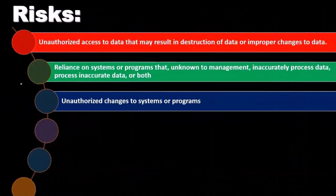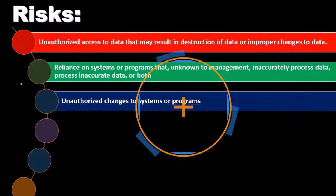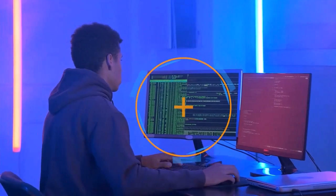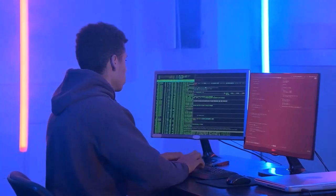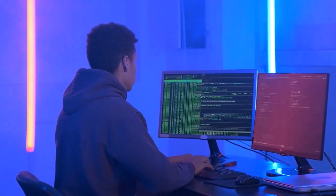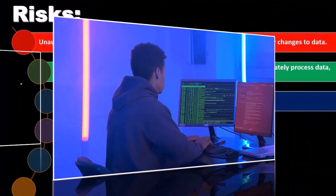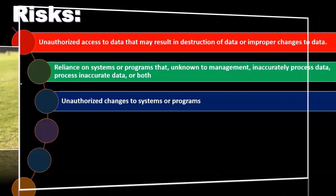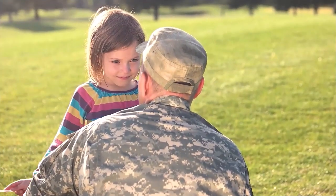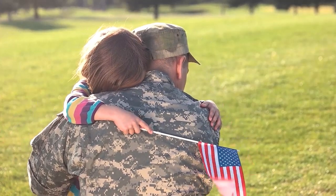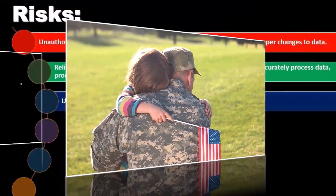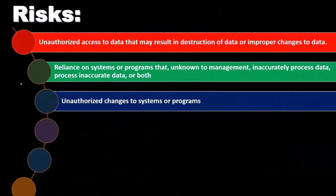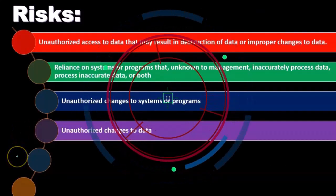There could also be unauthorized changes to systems or programs, so we need controls over who is operating in the system. A key problem here is that the person designing the internal control system — who understands what the separation of duties should be — is separate from the IT department that knows how to actually implement that segregation in the IT process. There has to be really good communication between those individuals to put a working separation of duties in place.